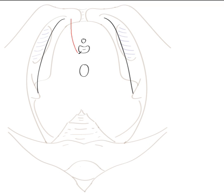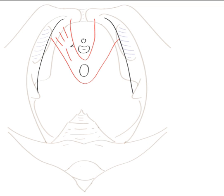The first muscle to highlight is puborectalis. Puborectalis originates from the pubic bones and also from the tendinous arch, and it runs posterior to the rectum, forming a sling-like structure which is important in maintaining fecal continence. Here we can see it coming from the pubis on either side and running posterior around the rectum — puborectalis, drawn here in red.